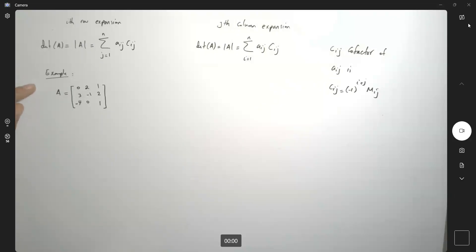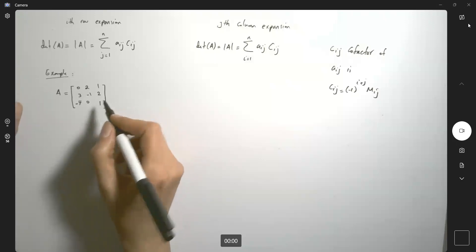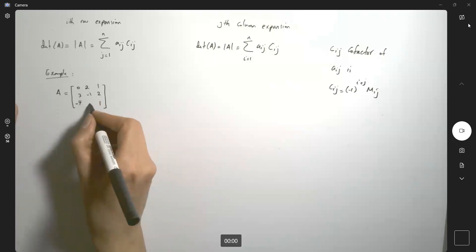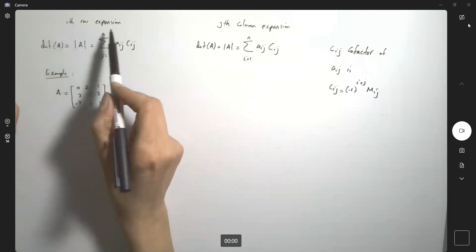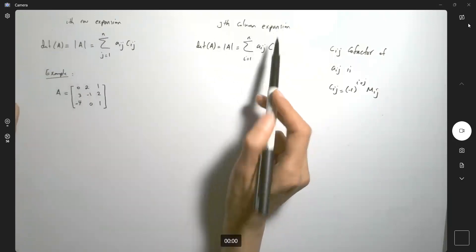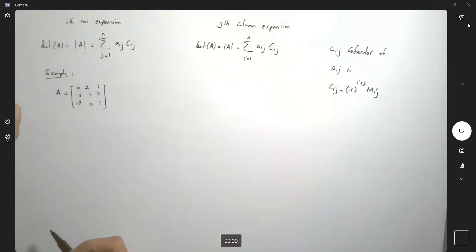Suppose I ask you to find the determinant of the following 3x3 matrix. You have two options: you can either expand it along the ith row or jth column. How does it work?